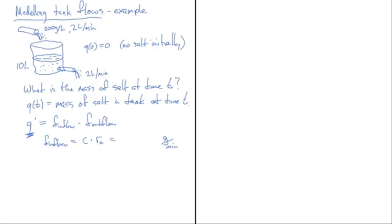I'll leave c_in and r_in in there for generality rather than substituting 200 immediately, so I don't have to carry all the unit notation around. You can see the units cancel: grams per liter times liters per minute gives grams per minute, matching the left side. F_outflow is also concentration times rate — concentration going out multiplied by r_out, the volume rate leaving.